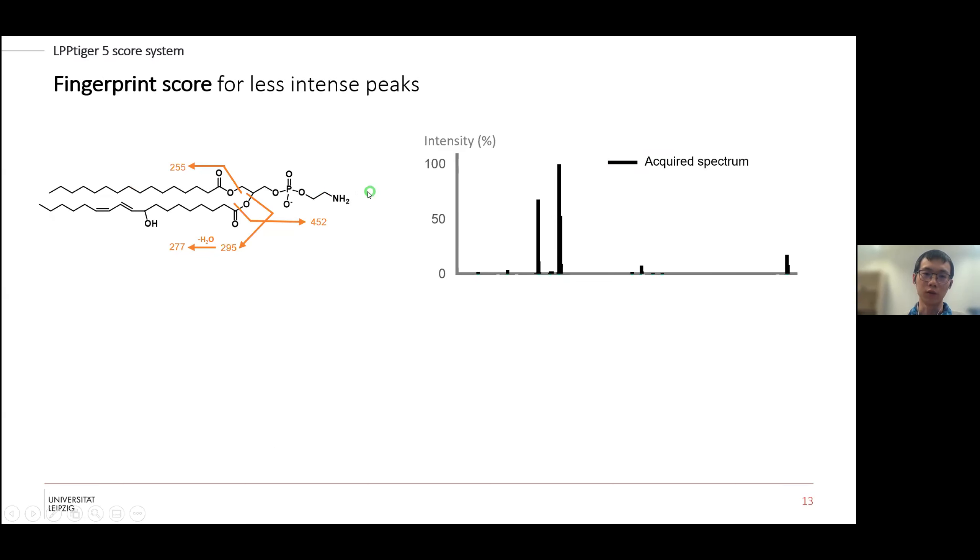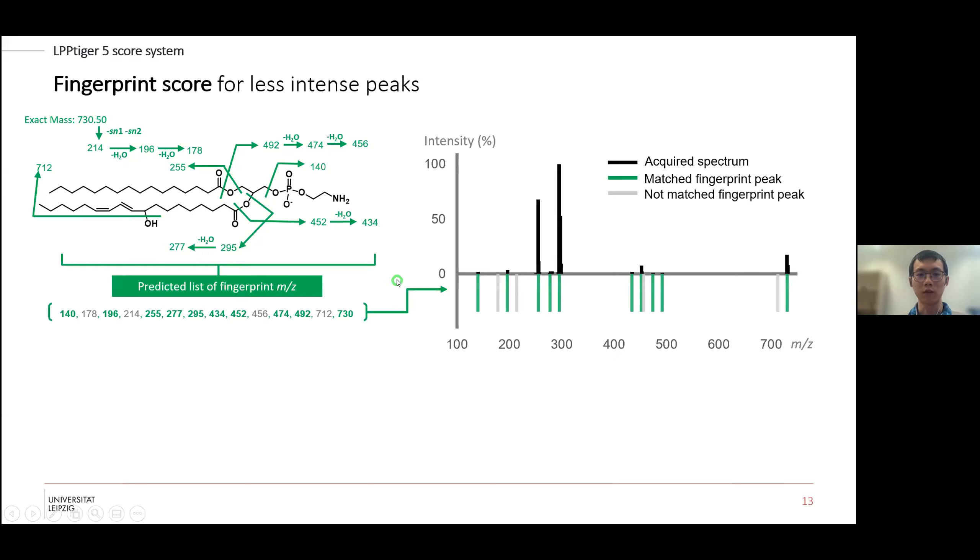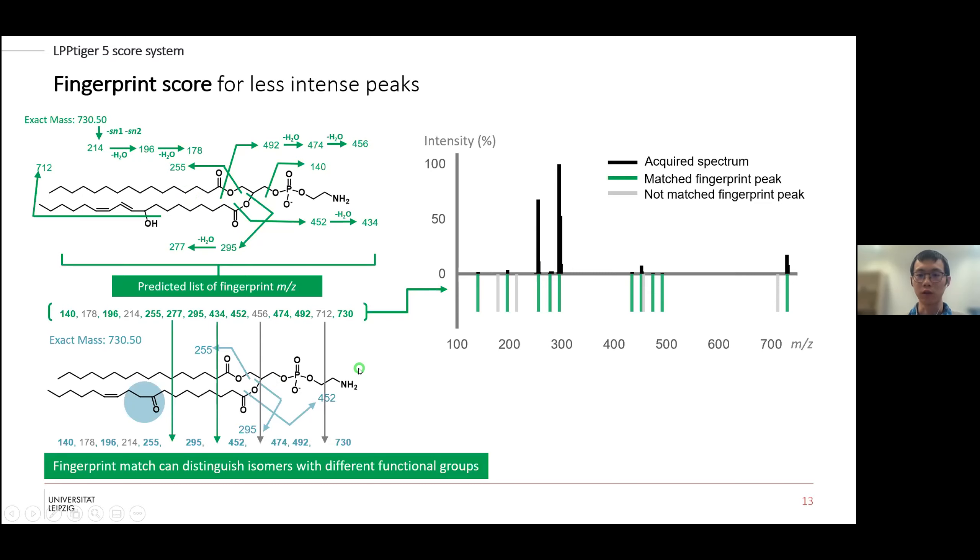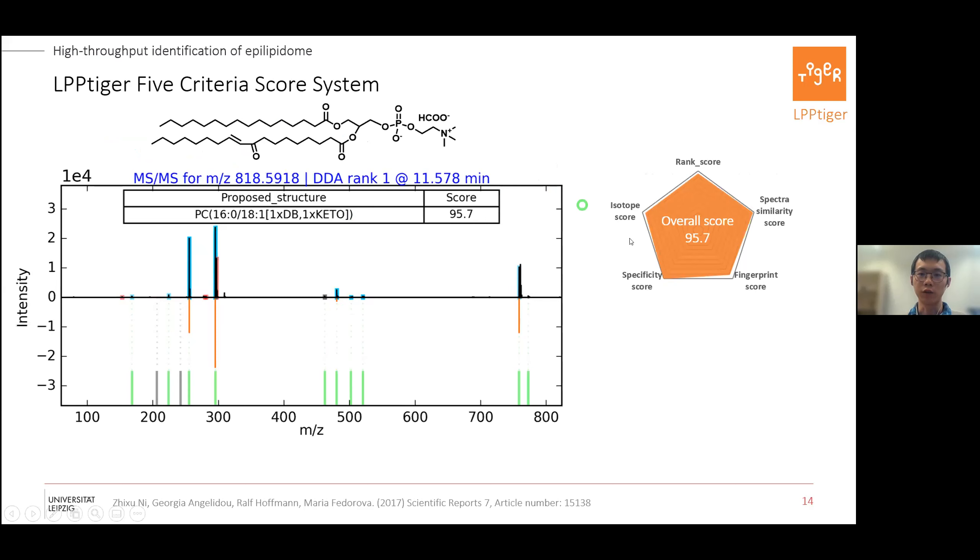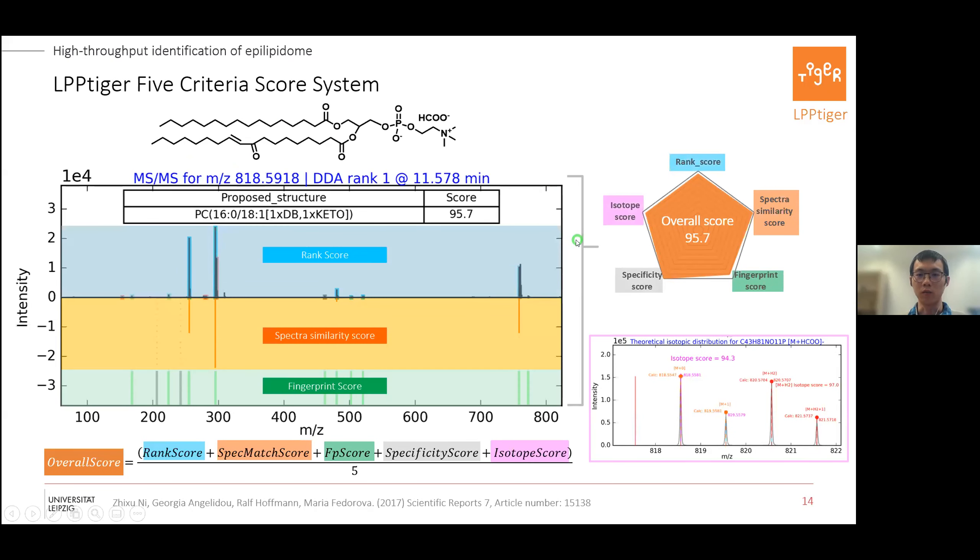All previous scores are about more intense signals, but for the oxidized lipids we have the neutral loss of water and additional fragments which are not that intense. So we introduce this fingerprint score, which is just checking the m/z, which is not intensity dependent. For this one we can distinguish whether there are hydroxy groups or, for example, keto groups which do not have the neutral loss. When we summarize all these different criteria together, we can get more confident identification of the structure to identify the type of the modifications.